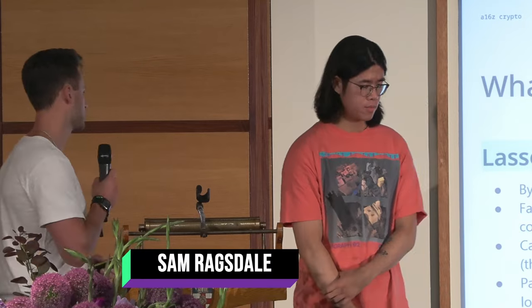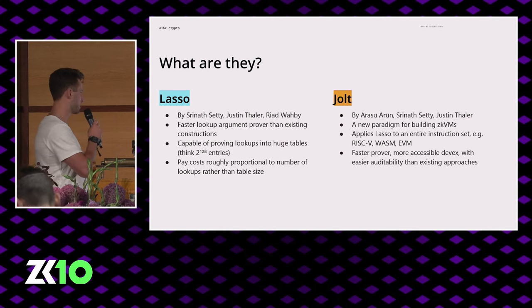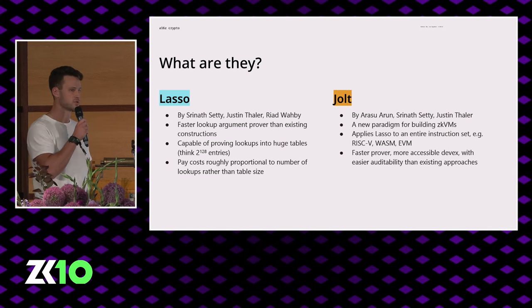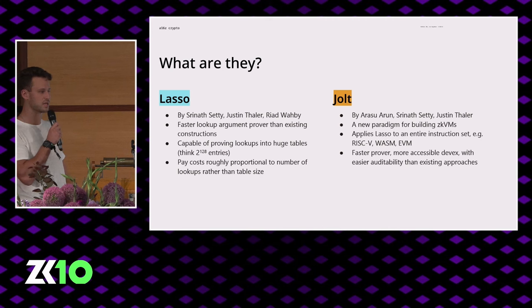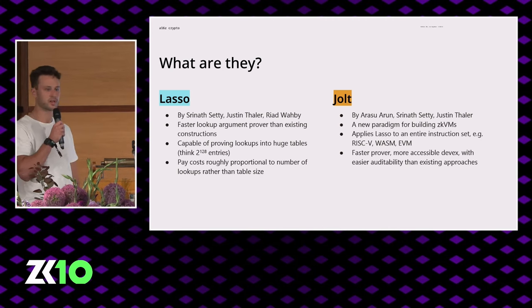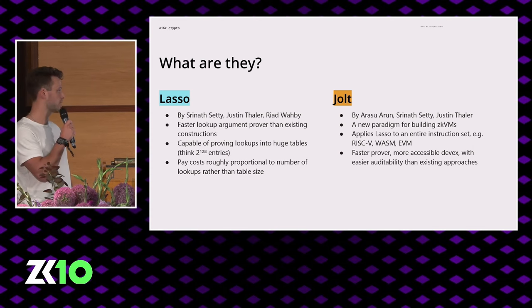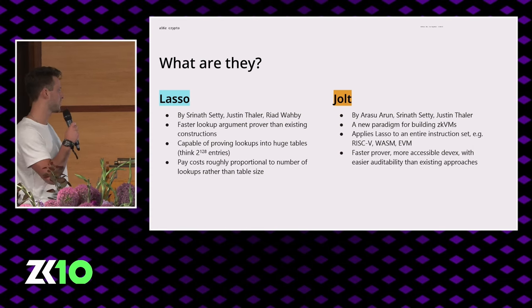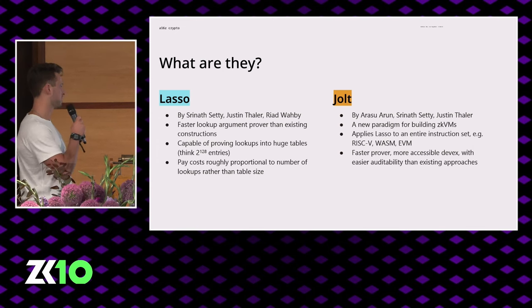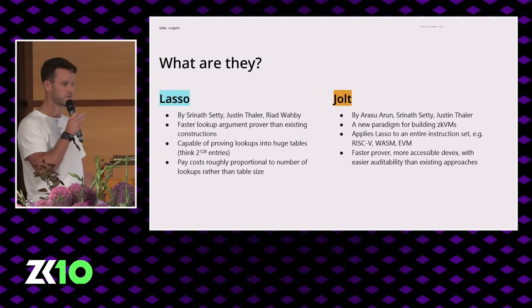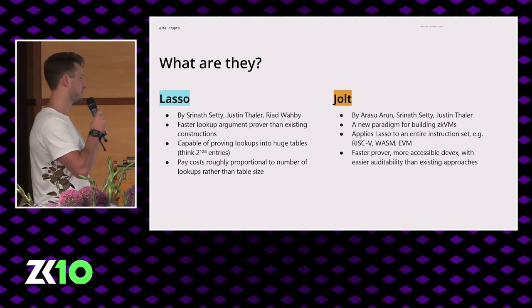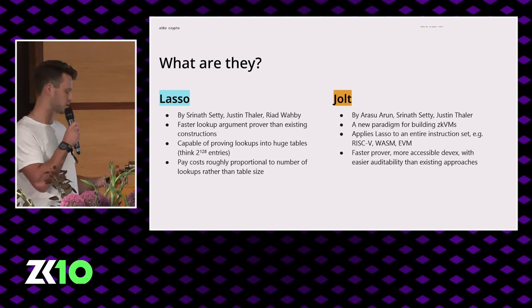These are two closely related research papers. Lasso was written by Sreenath Setty, Justin Thaler, and Riyadh Wabi. It provides a faster lookup argument prover than existing constructions, capable of proving lookups into massive tables — on the order of 2 to the 128 entries — and you pay costs roughly proportional to the number of lookups rather than the table size. Jolt is a closely related work which builds on top of Lasso, written by Aresu Arun, Sreenath Setty, and Justin Thaler. It provides a new paradigm for building ZKVMs, applying Lasso to an entire instruction set — think RISC-V, WASM, or the EVM — with a faster prover, more accessible DevEx, and easier auditability.